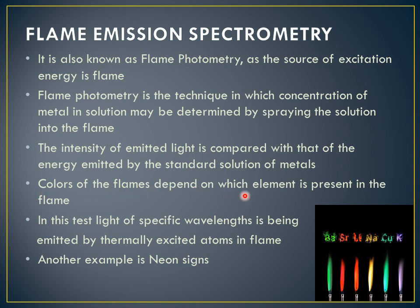The colors of the flame depend on which element is present. This emission phenomenon forms the basis of the flame test. When we analyze different elements, we take some salt into the flame and observe different colors: barium shows green flame, strontium shows red, sodium yellow, copper green, and potassium a purple color. The atoms are excited in the flame and return to their ground state by emission of radiation appearing as different colors.